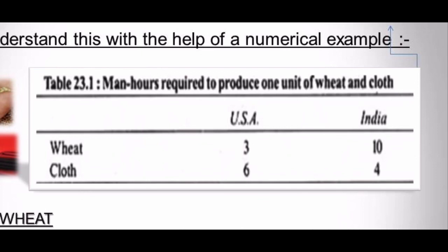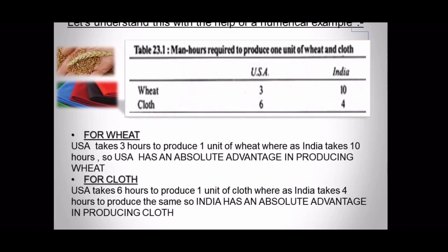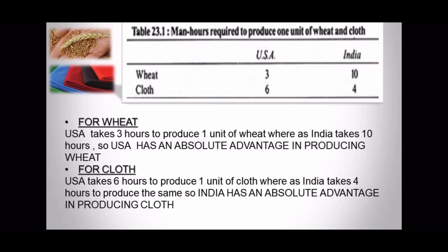For wheat, USA takes 3 hours to produce 1 unit of wheat whereas India takes 10 hours. So USA has an absolute advantage in producing wheat. For cloth, USA takes 6 hours to produce 1 unit of cloth whereas India takes 4 hours to produce the same. So India has an absolute advantage in producing cloth.